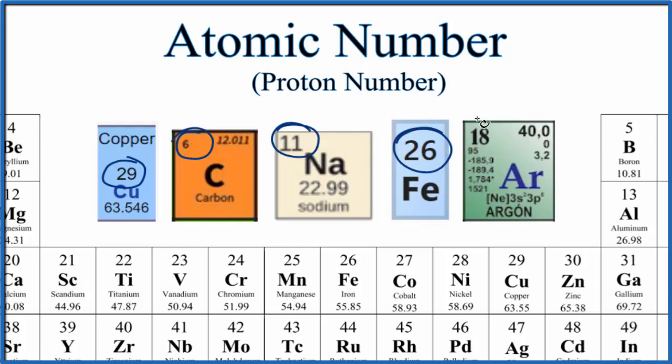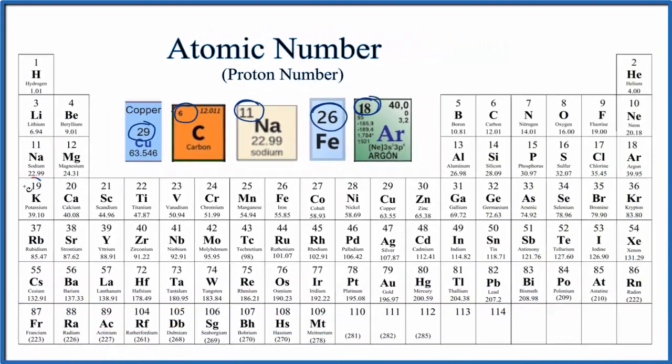And then for argon, we have a lot of different information here. But this number 18, the whole number 18, that's the atomic number. 18 protons, and since there's no negative or positive, argon's a neutral element, 18 electrons. If you're confused, just remember the atomic number, it's going to increase by one as we go across a row, also called a period, on the periodic table.